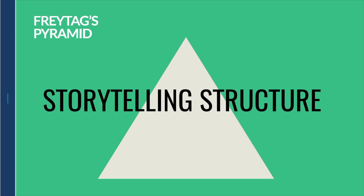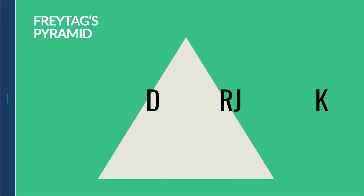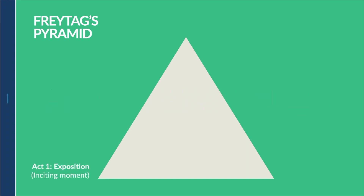The structure of a learning narrative mimics the structure of storytelling. Here is Freytag's Pyramid, which depicts the storytelling structure. First, you have the exposition, where the scene is set and the background is explained. Next, you have the complication, or the rising action, where the story builds because things start to get more complex for the protagonist.